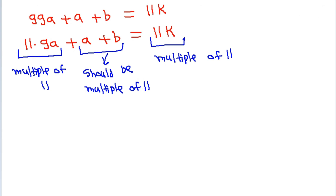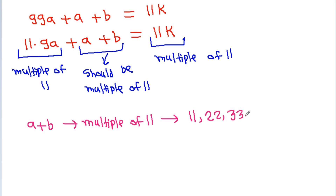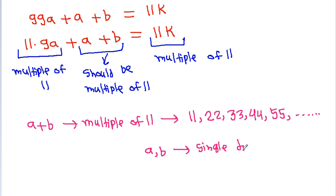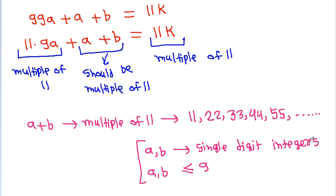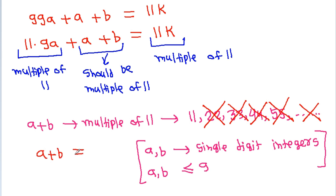So A + B is a multiple of 11, meaning it could be 11, 22, 33, 44, 55, and so on. But since A and B are single-digit integers, they are each at most 9, so A + B is at most 18. Therefore A + B cannot equal 22, 33, 44, 55, or higher, which means A + B must equal exactly 11.